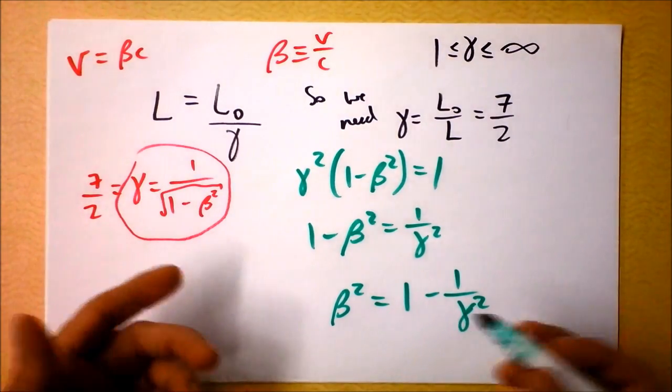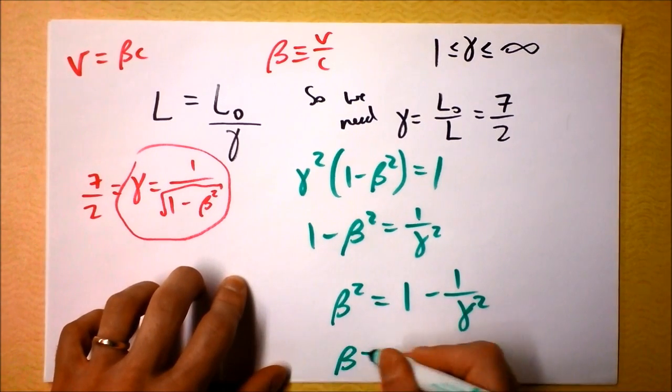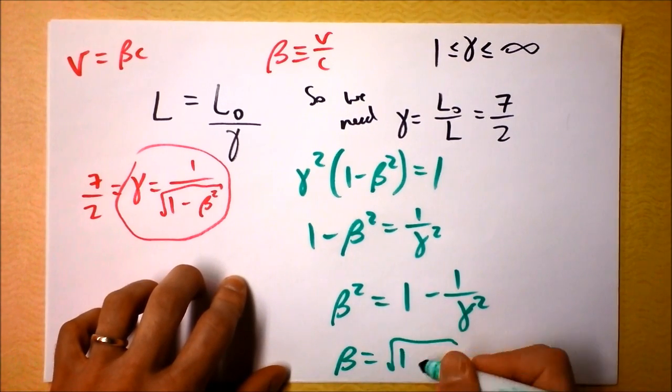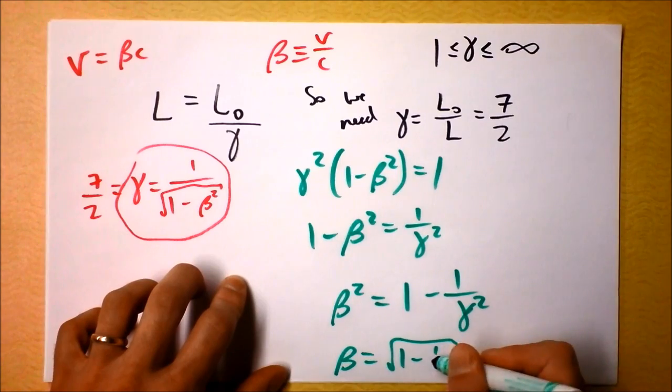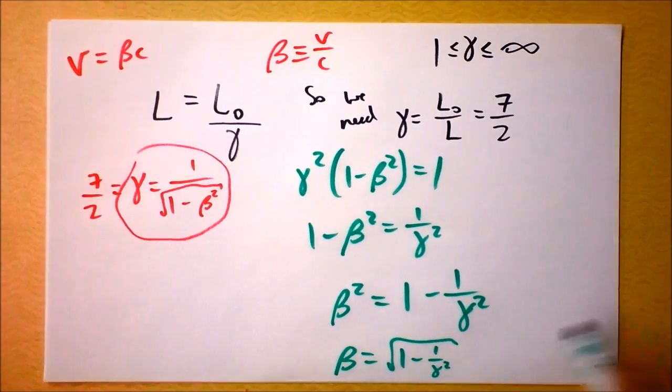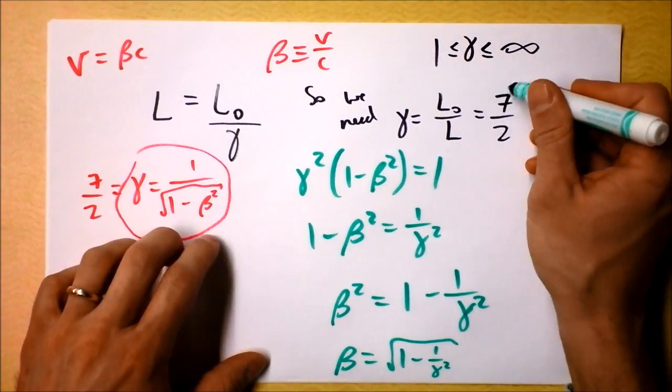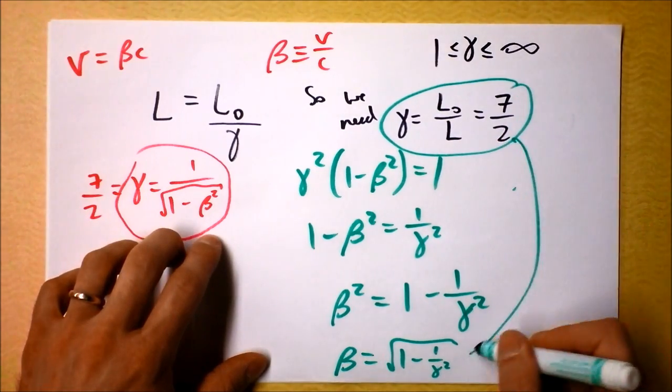And then, what do I have to do, just square root both sides? Beta is the square root of 1 minus 1 over gamma squared, and I know that gamma is supposed to be 7 halves, so I'll plug that in right here. Look at the symmetry, isn't that beautiful, the way that symmetry worked out?